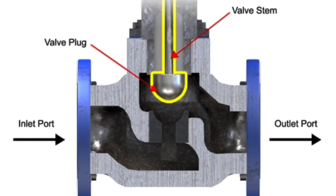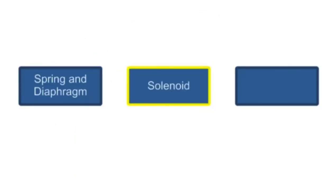Three actuator types are used in control valves and they include spring and diaphragm, solenoid and motor.